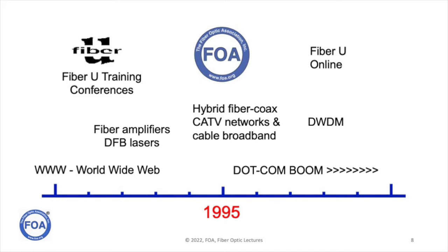The 90s also saw the beginning of dense wavelength division multiplexing, which combined with fiber amplifiers and DFB lasers tremendously increased the capacity of an individual fiber. We also saw the beginning of data centers to service the internet, and in 1999 the term 'Internet of Things' was coined. So the 90s was sort of the production side of developing fiber optics — an amazing time, but it wouldn't last.